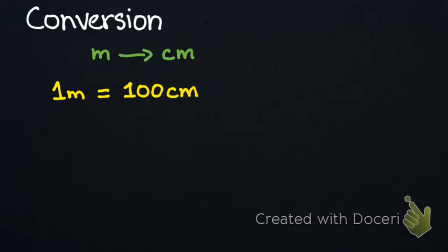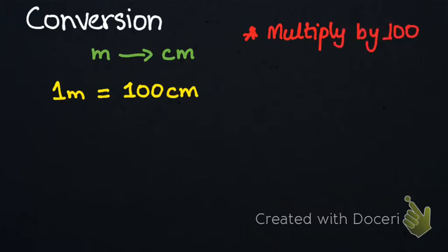So it is very easy. If one meter equals 100 centimeters, then two meters will be equal to 200 centimeters. All we have to do is multiply the value by 100.